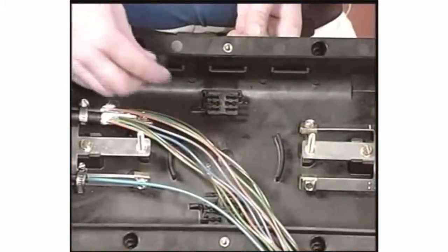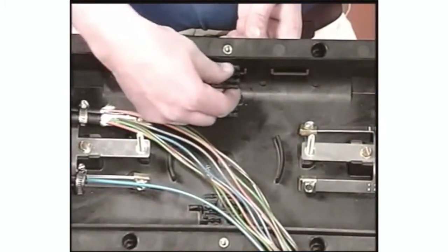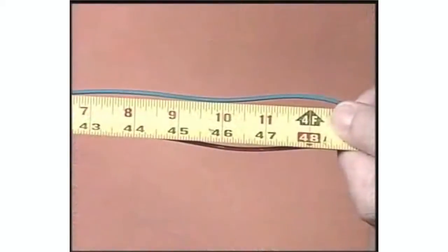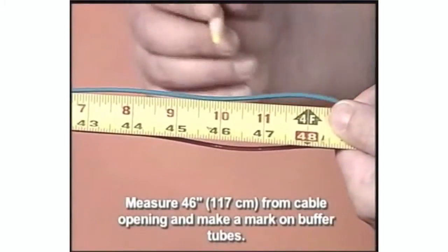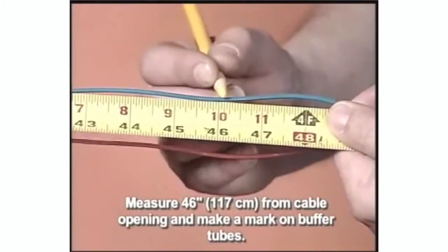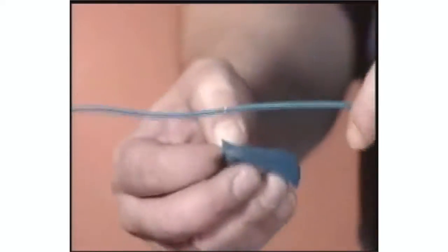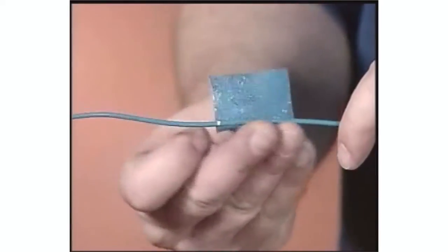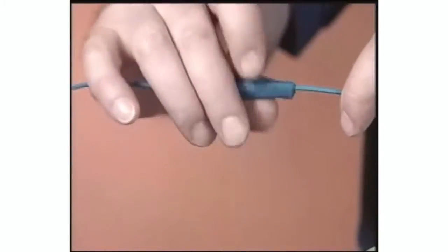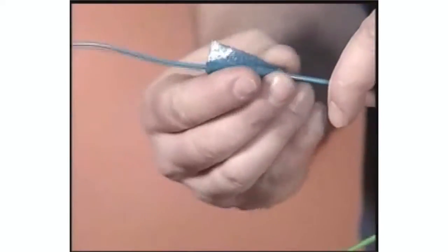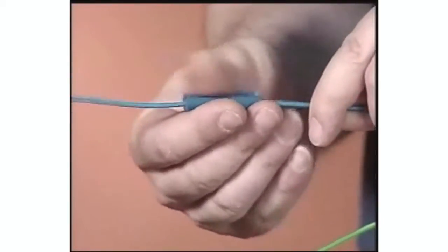Insert the tie-down clips in one of the eight provided slots. Measure 46 inches from the cable opening and make a mark on your buffer tubes. Apply blue felt to the buffer tubes at that location. Now you can remove the buffer tube and clean the fiber per your company practice.